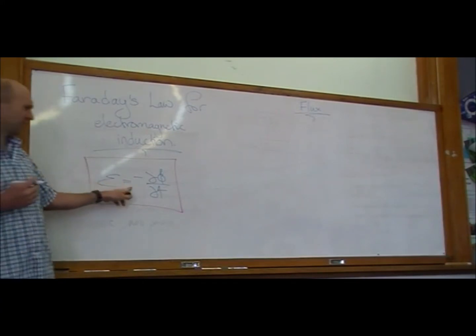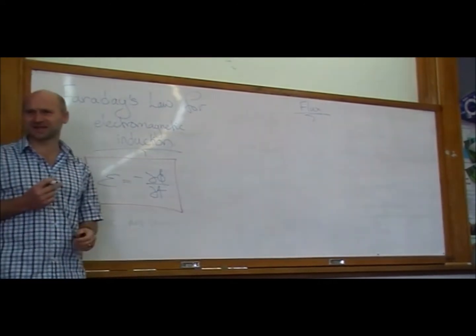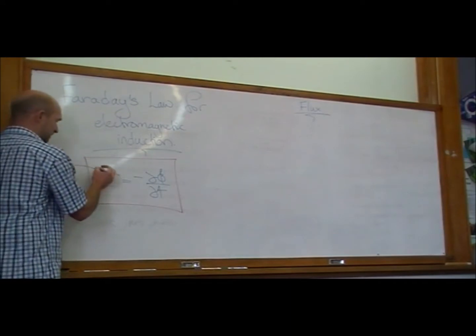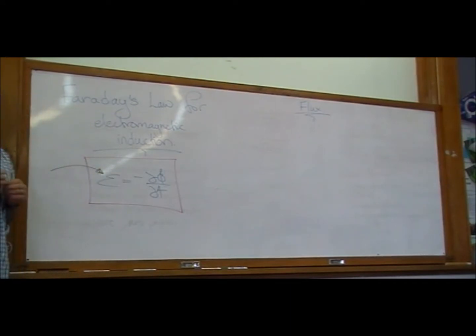Epsilon is minus d phi by dt. Epsilon, that's a familiar looking character. What did that mean last time? That was in physics class. Do you remember we used it for voltage back when we were talking about internal resistance? That Epsilon was the symbol for the chemical potential inside the battery.